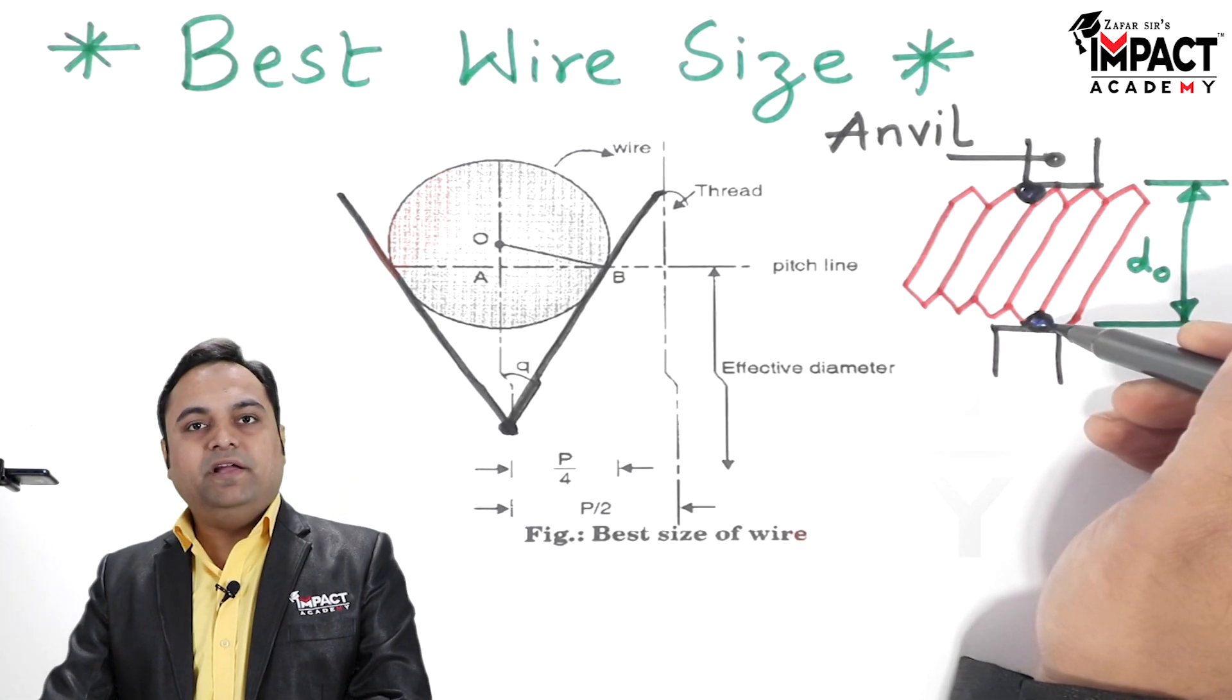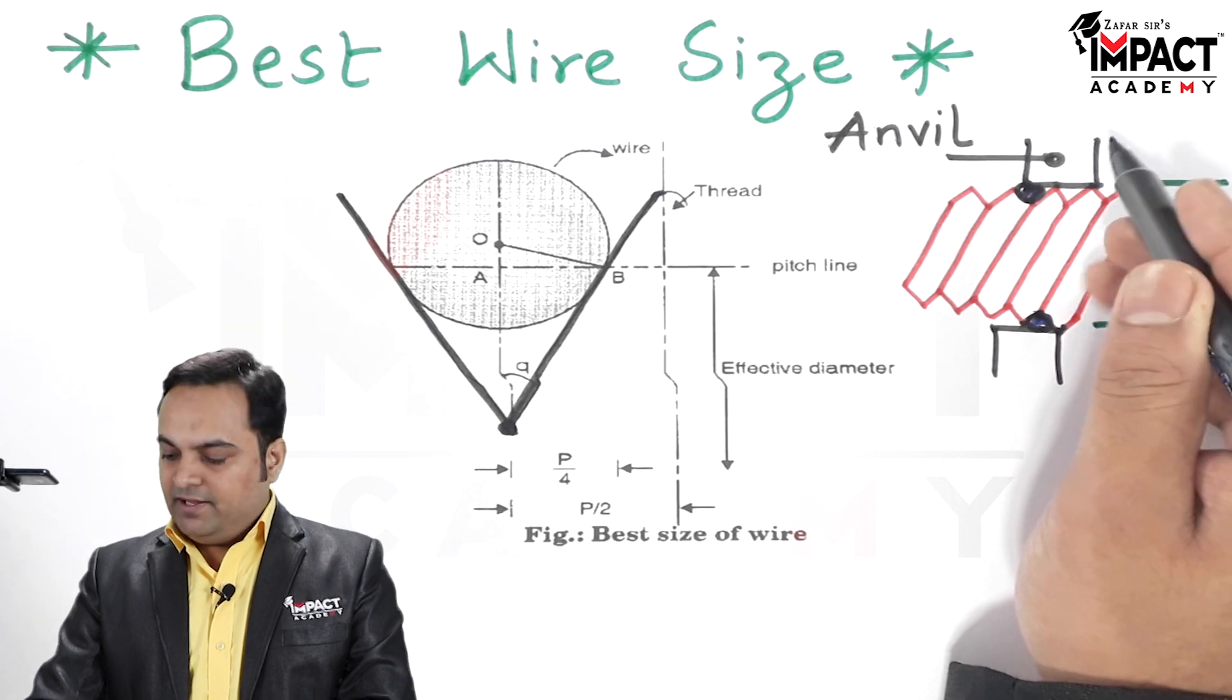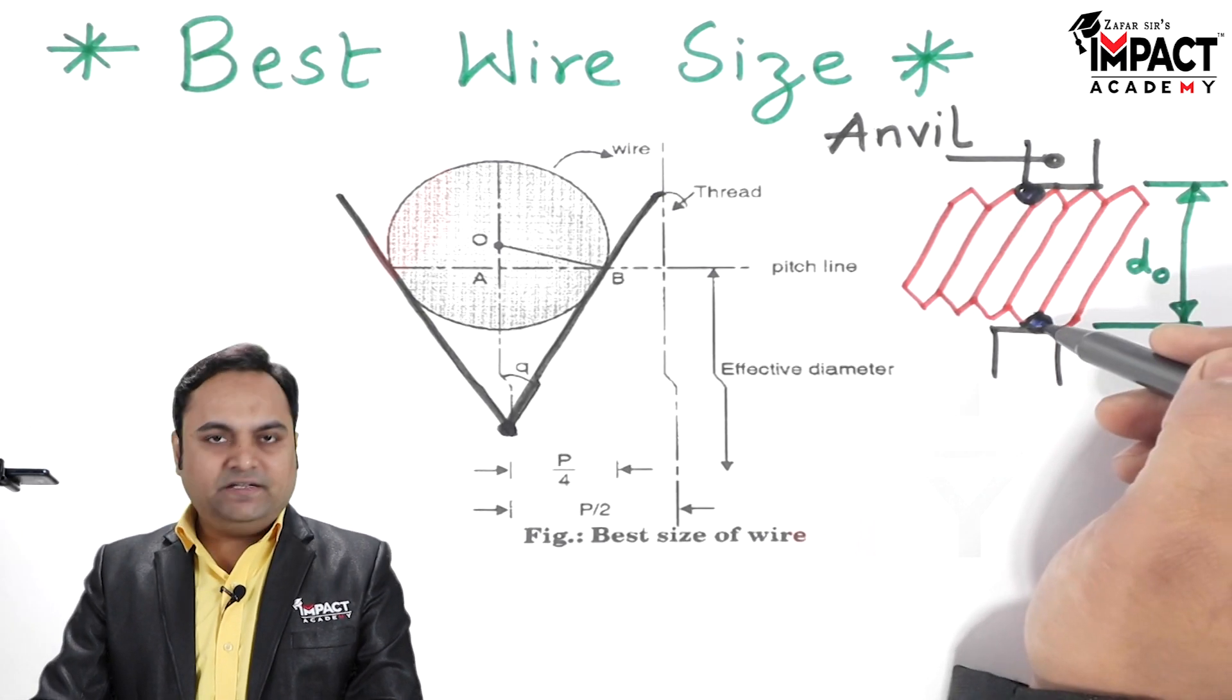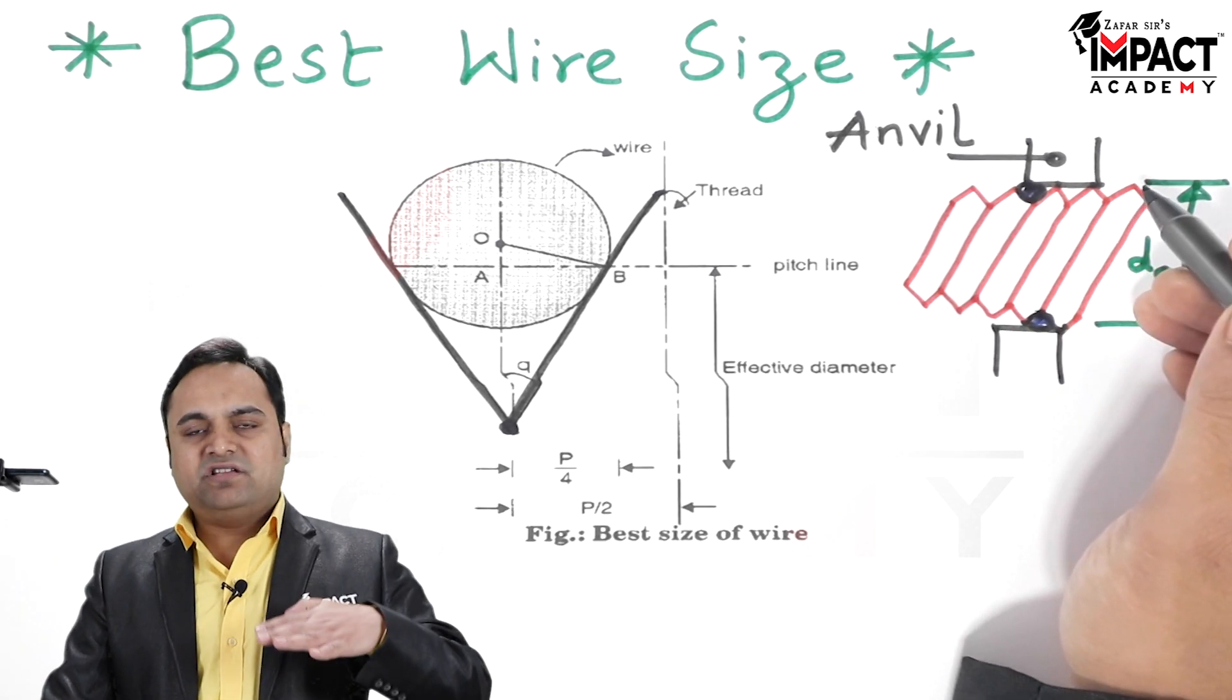So here these are the wires which are placed in the groove or V groove of the screw thread, and then the anvil is attached. Because of the presence of these wires we are going to get an even surface.